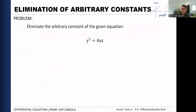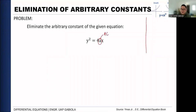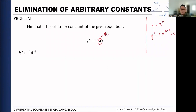Let's solve the first example: eliminate the arbitrary constant of y² = 4ax. The arbitrary constant is 'a'. Since there is only one arbitrary constant, we differentiate once. We use implicit differentiation since both y and x are variables, with x as the independent variable. Differentiating both sides using the power rule: 2y dy/dx = 4a. So 2y·y' = 4a, which gives us a = (1/2)y·y'.